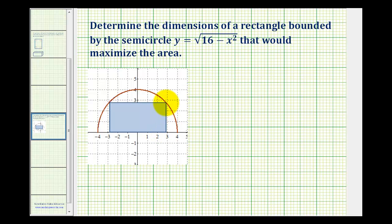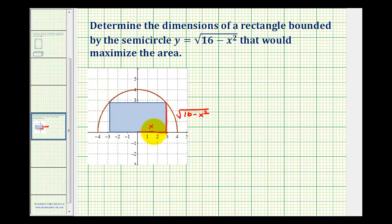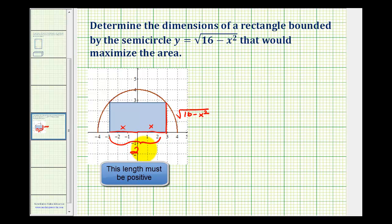The length from here to here would be equal to y, but y is bounded by the function, so the length of this side here would be equal to the square root of 16 minus x squared. Looking at the horizontal distance, the distance from the origin to this corner would be x, and therefore the length on the other side would also be equal to x. So the length of this entire side would be 2x.